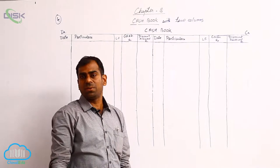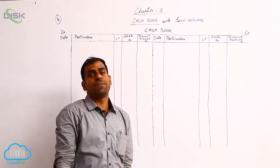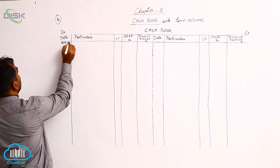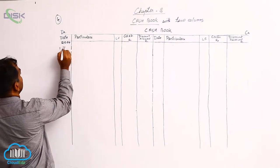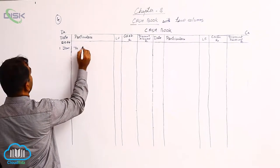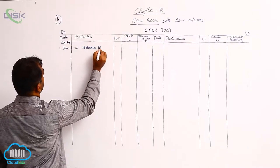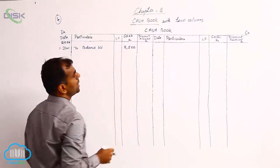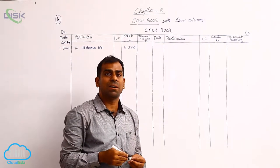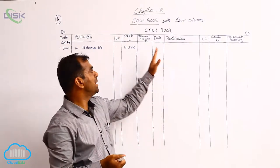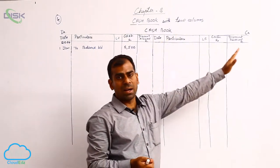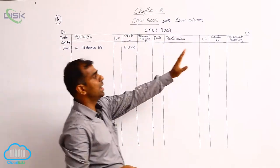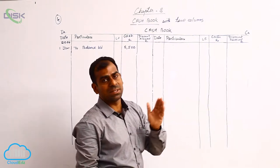The problem is for the month of January 2014. On 1st January, the balance of cash is 5500, so we write 'balance brought down' for the amount of 5500. Remember, you will not have any opening balance or closing balance for discount allowed and discount received, because periodically at the end of the month these columns are totaled and posted to the respective accounts.